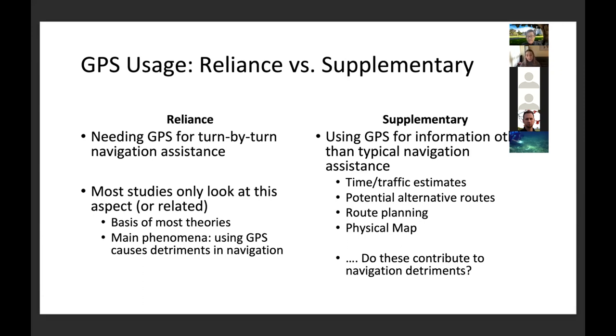Supplementary functionalities, on the other hand, contain information that would be mostly impossible to know prior to traveling. This can include time and traffic estimates, alternative routes, planning routes, and using the GPS similar to a paper map, where there's easy access to information on all the surroundings. And this is really where my research question comes in, as we don't have much evidence on if this grouping actually has any effect on navigation. Next slide.